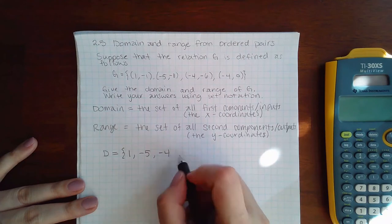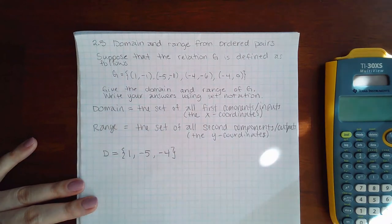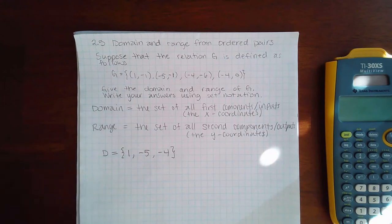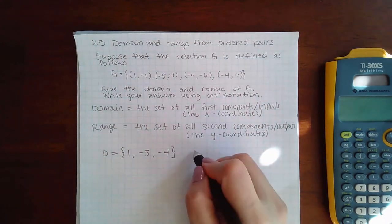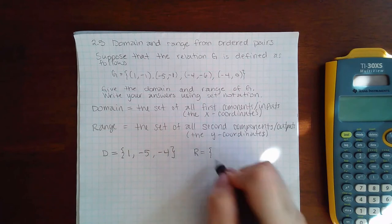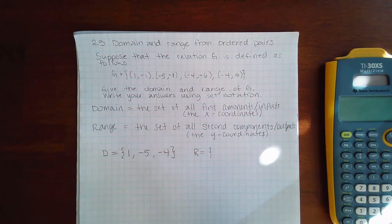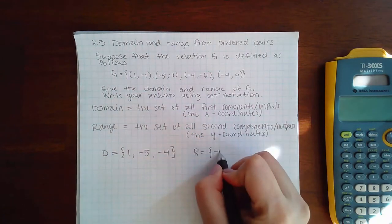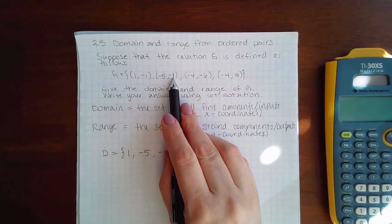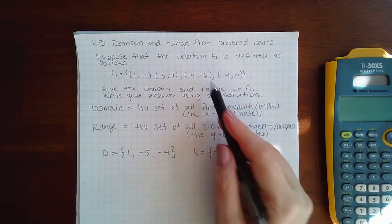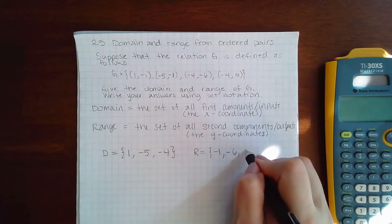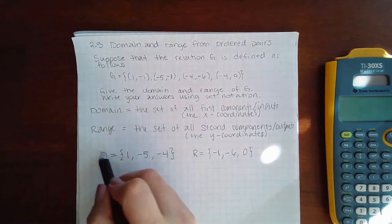For the range, we have the list of distinct Y values: -1, -6, and 0. Note that -1 appears twice but we only list it once. This is the domain and range of this particular ordered pair set.